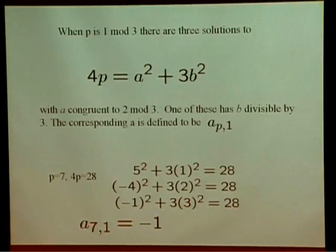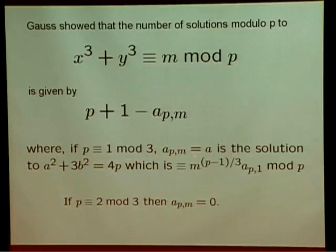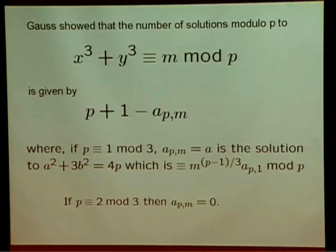If you count the number of solutions of x³ + y³ ≡ m mod p, it'll be p + 1 − a_{p,m}, where if p is 2 mod 3 then a_{p,m} is 0, and if it's 1 mod 3, then it's the a from this, which happens to be congruent to m^{(p−1)/3} times a_{p,1} mod p. With that definition of a_{p,b}, here's Watkins' conjecture.